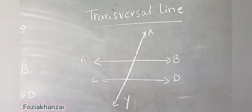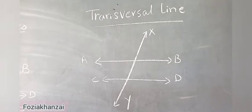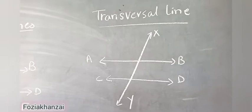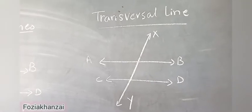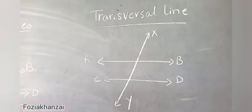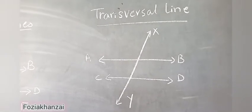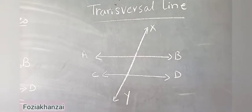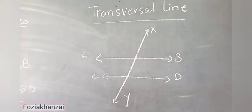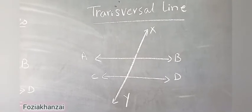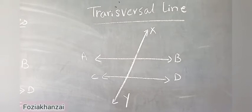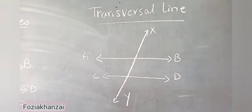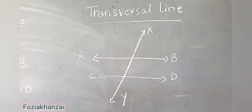It is not always necessary to have just two parallel lines — sometimes we have more than two: two, three, four. XY is called the transversal line. The transversal line cuts or intersects the parallel lines.